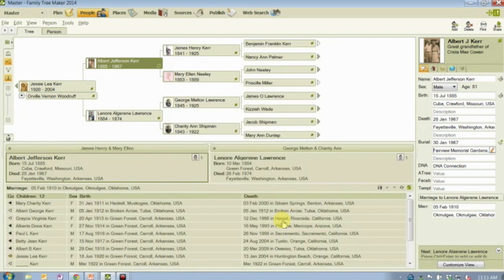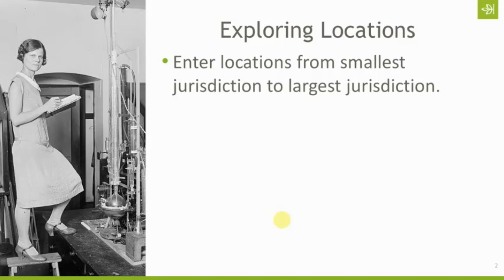Record your locations from smallest jurisdiction to largest jurisdiction, but make sure that really specific things like hospitals, cemeteries, churches, and addresses go into the place detail field — not into the city, town, county, or state slots.